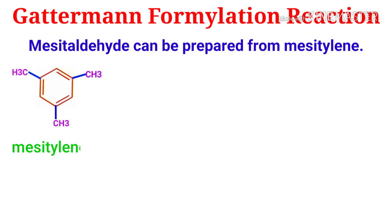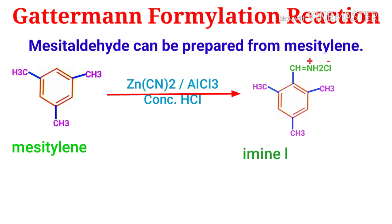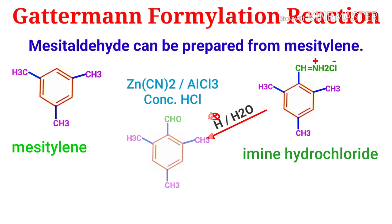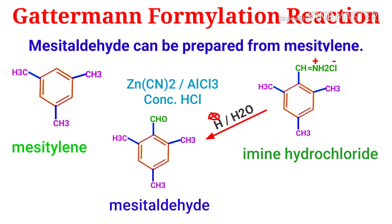The Gutterman reaction is successful with phenols and phenolic ethers. For example, mesitaldehyde can be prepared from mesitylene by treatment with zinc cyanide and anhydrous AlCl3 in the presence of concentrated hydrogen chloride, to give an imine hydrochloride intermediate. After hydrolysis, it gives mesitaldehyde as a product and ammonium chloride NH4Cl.